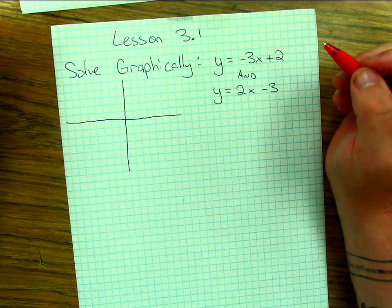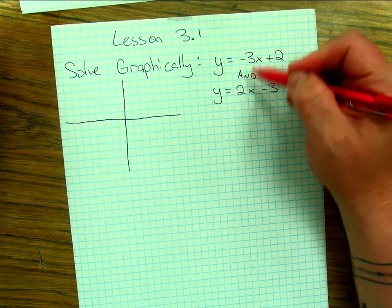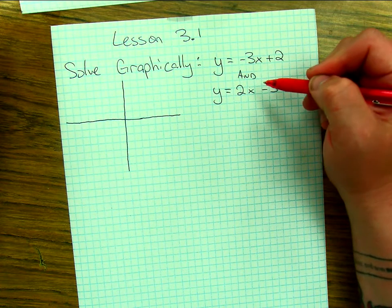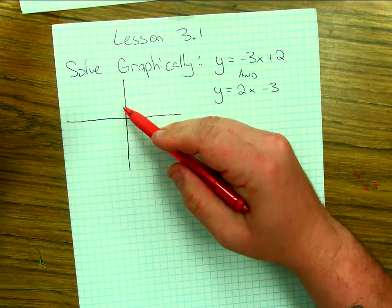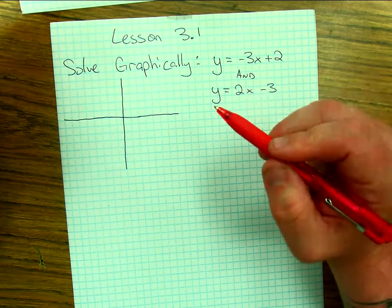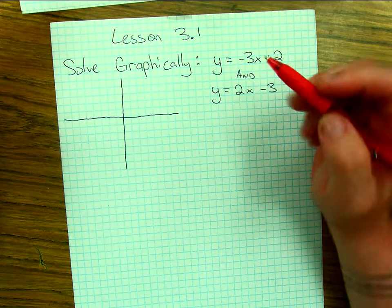In this chapter we're going to learn lots of ways to do exactly that. Figure out what the one solution is, if there is one, for two different lines. One way to do it is graphically. That's what we're going to start with today. If we graph both lines, the one spot that's common to both graphs should be where they intersect.